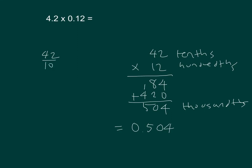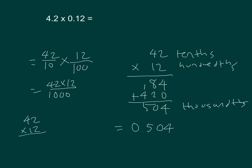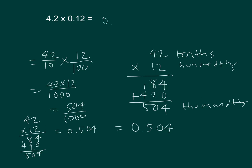Working with our fractions: 42 tenths times 12 hundredths. That's equal to thousandths. And 42 times 12 gives 504, again equals 504 thousandths, which equals 0.504. So that's my answer — my product, my answer to a multiplication problem.